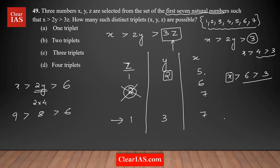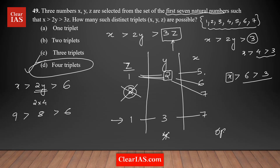That gives one more triplet: (1,3,7). If we try y = 4, then x must be greater than 2 times 4 = 8, which is not possible. So in total there are four distinct triplets, making option D the correct answer. The key point in this question is to start with z — the smallest variable — to determine the conditions for y and x.